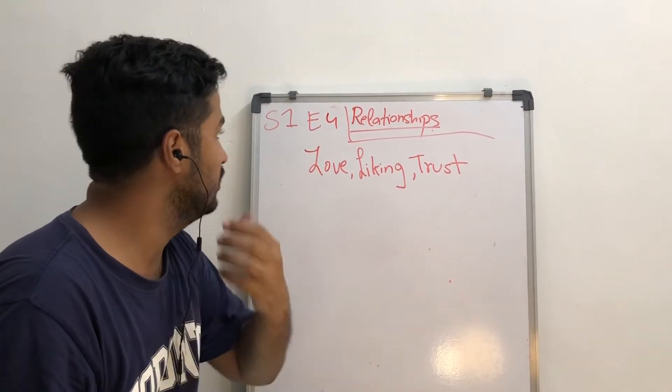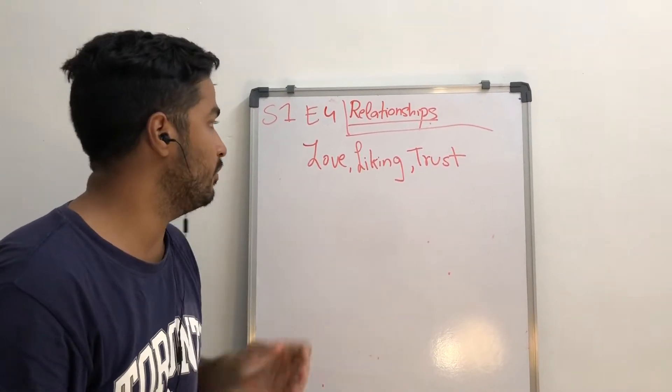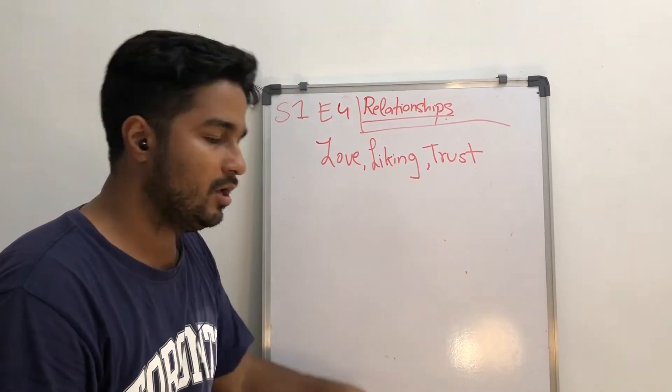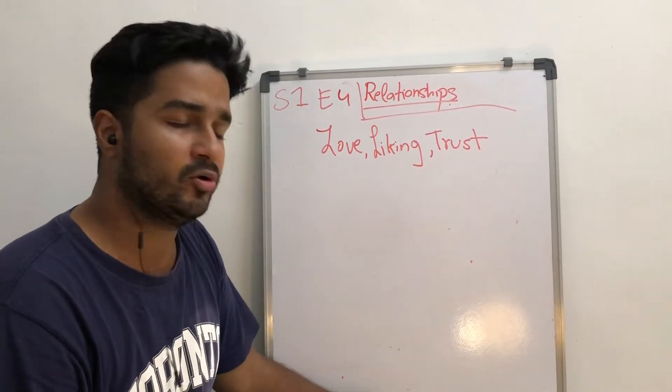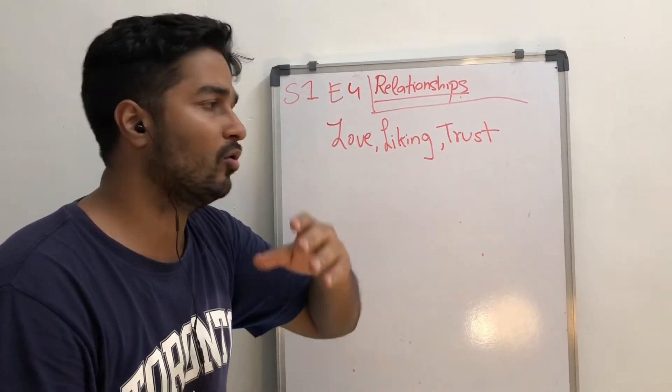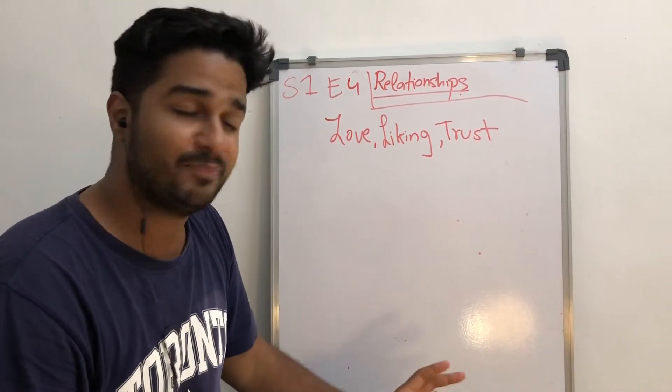Okay guys, so we are here for Relationships Season 1 Episode 4. We are going to talk about love, liking, and trust. Now a lot of people don't understand the meaning of these terms. Many people confuse them to be the same thing, but no, they are not.